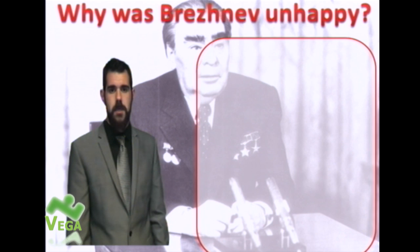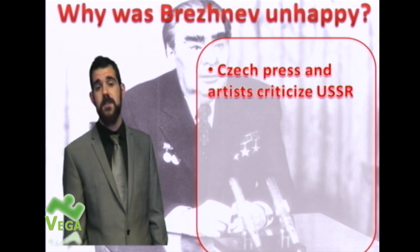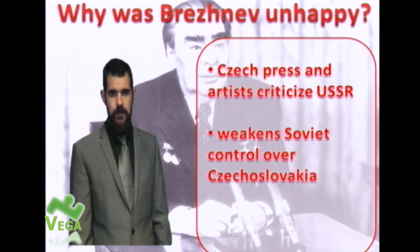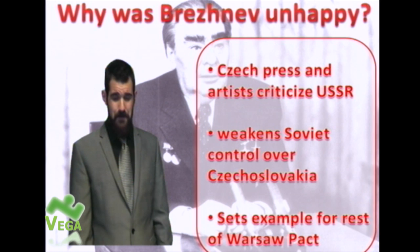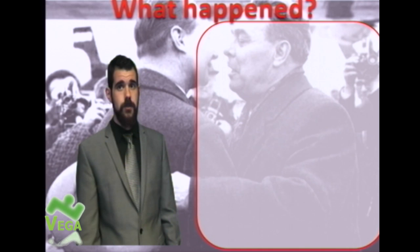Brezhnev is unhappy. The Czech press immediately seizes upon the freedom of expression and starts to criticise not just the Czechoslovakian government — which was possibly the intention — but the USSR government. This is worrying if you're the Soviet Premier. Soviet control over Czechoslovakia is therefore weakened, and Russia likes to dominate its satellite states. The big problem for Brezhnev is what sort of example this is setting for the rest of the Warsaw Pact countries — Czechoslovakia was supposed to be the country doing well out of communism.